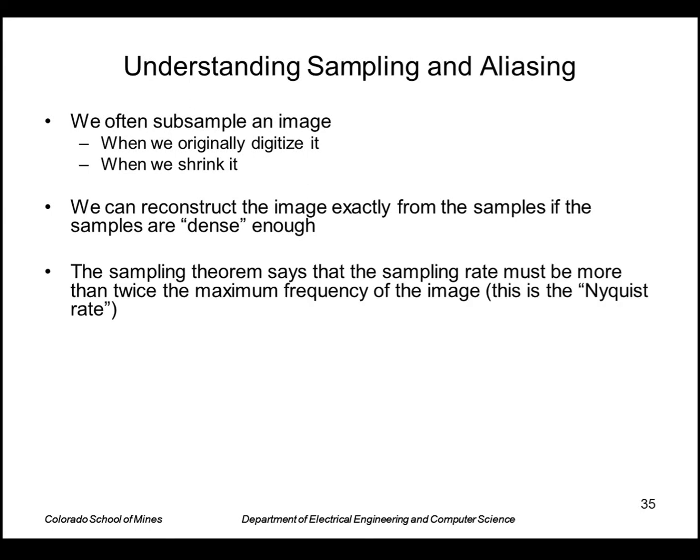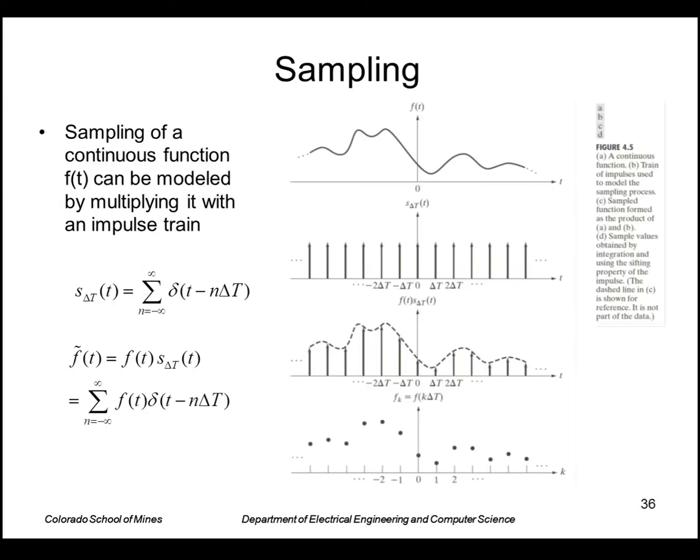And what that means is from the sampling theorem, which says that the sampling rate must be more than twice the maximum frequency of the image. If you don't sample at that rate, if the sampling rate is lower, then you can get errors in the reconstructed image called aliasing.